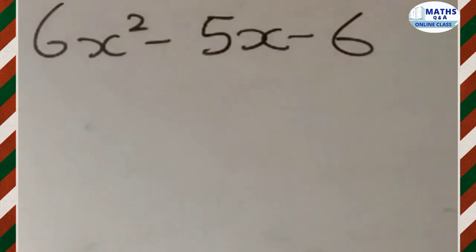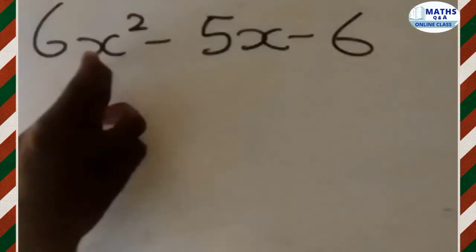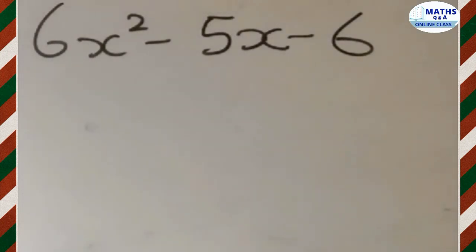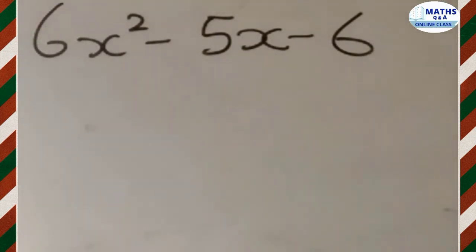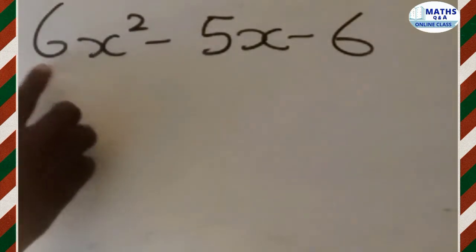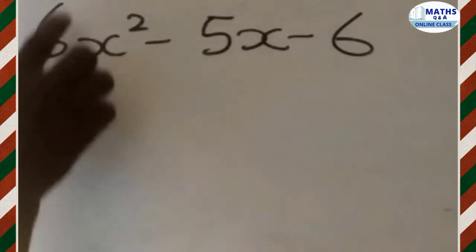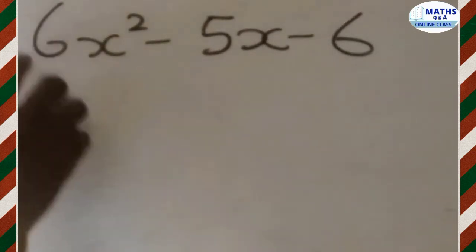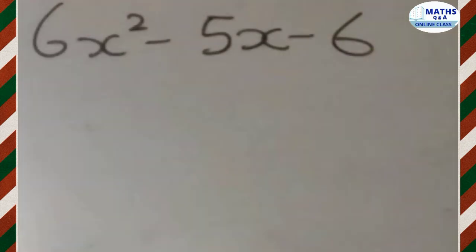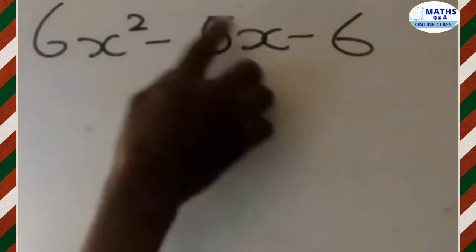If we can factorize this, what we have to note is that we have 3 terms in this question. So before we can factorize it, we have to make sure that these 3 terms now turn to 4 terms. What we are going to do is first multiply the coefficient of the x squared — which is 6 — by the constant number in this question. From that result, we will find 2 factors which can be added or subtracted to get the coefficient of x, which is 5.